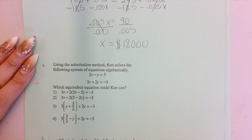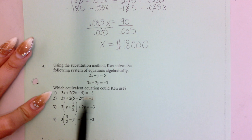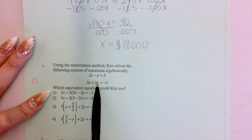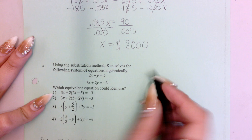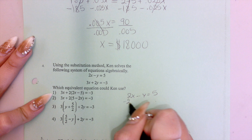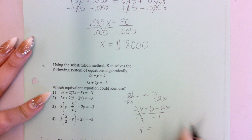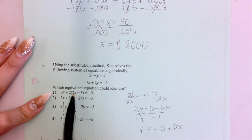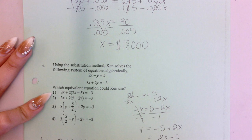Looking at the answer choices, I need to think about what was solved for. In this problem they solved for y by substituting one expression into another. So starting with 2x minus y equals 5, I solve for y: subtract 2x from both sides to get negative y equals 5 minus 2x, then divide by negative 1 to get y equals negative 5 plus 2x, which is the same as 2x minus 5. Looking at the choices, 2x minus 5 matches — positive 2x and negative 5 — so that answer choice is correct.